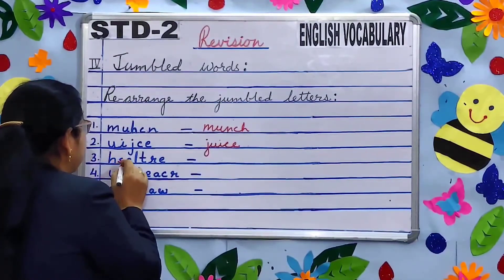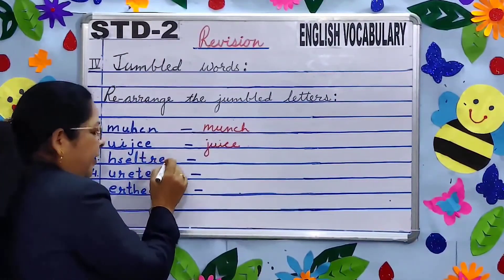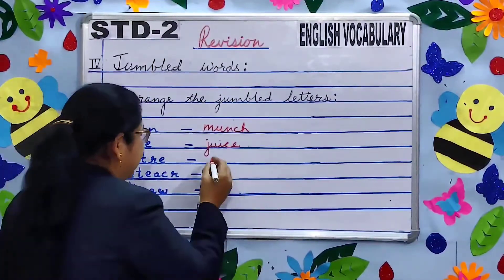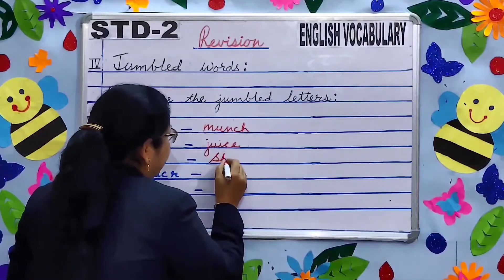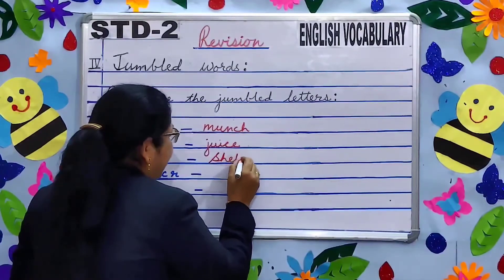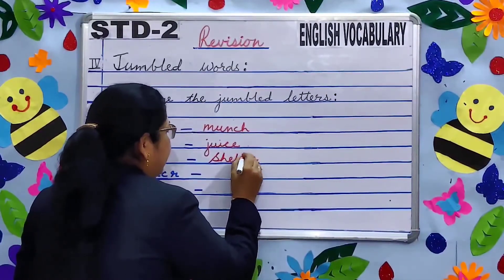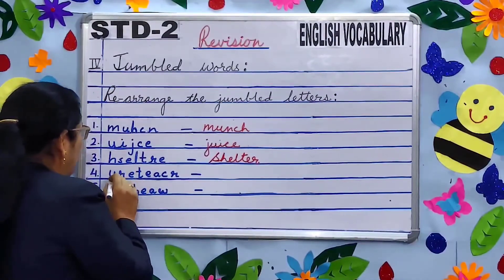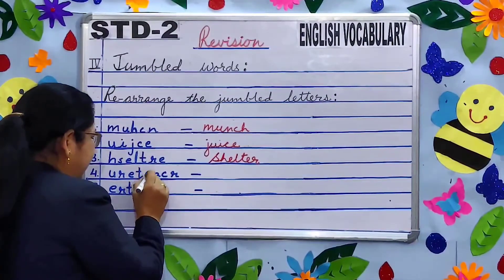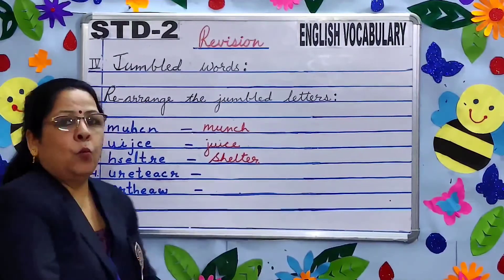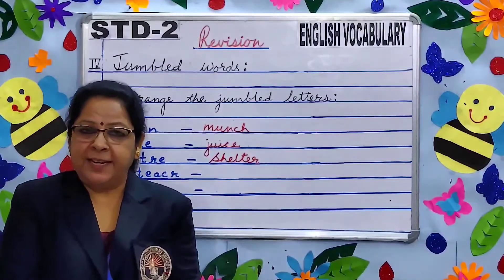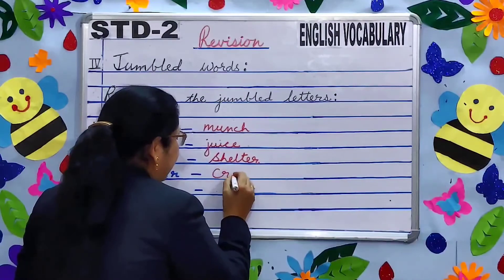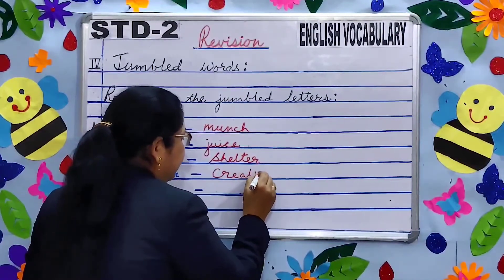Number three: H-S-E-R-E-L-T-E — what is the correct word? Very good — 'shelter', S-H-E-L-T-E-R. Number four: U-R-E-T-E-A-C-R — what is the correct word? Very good — 'creature', C-R-E-A-T-U-R-E.